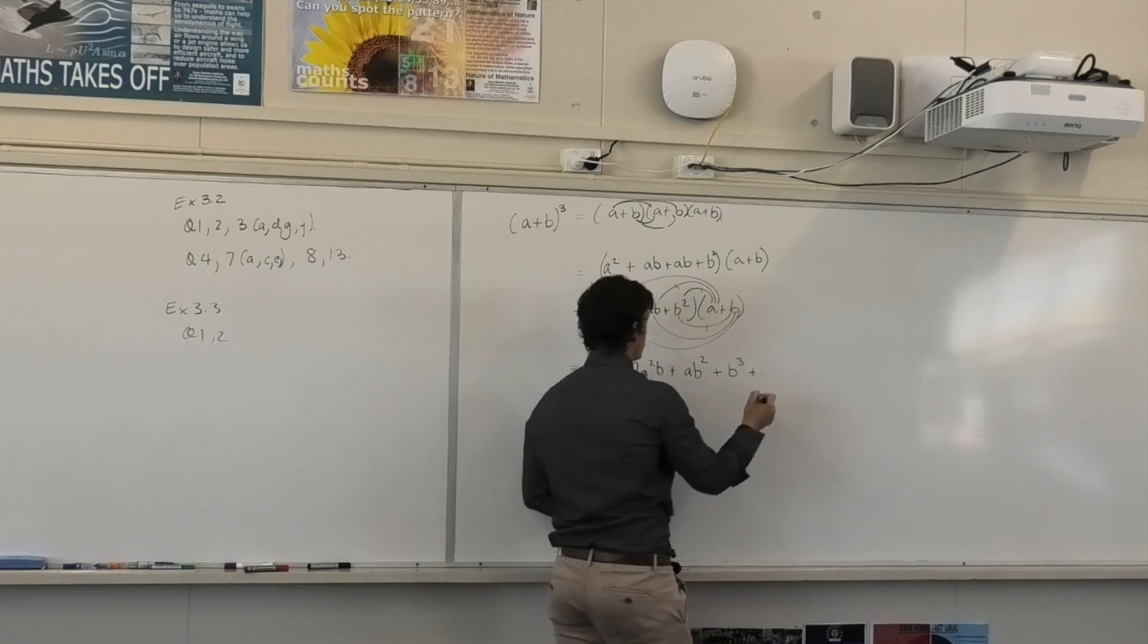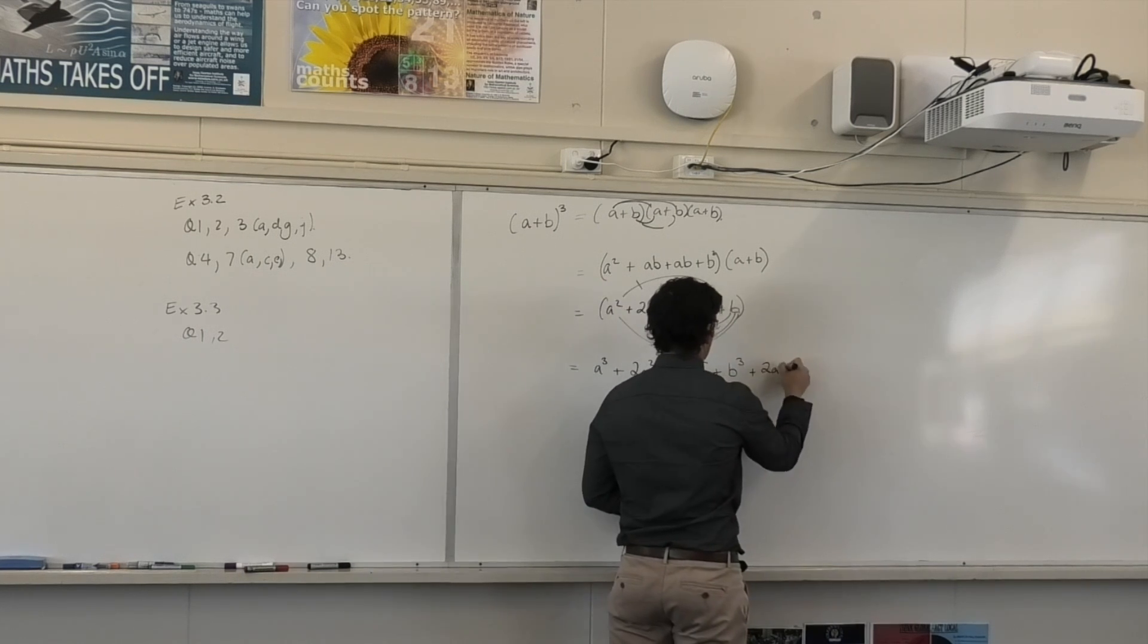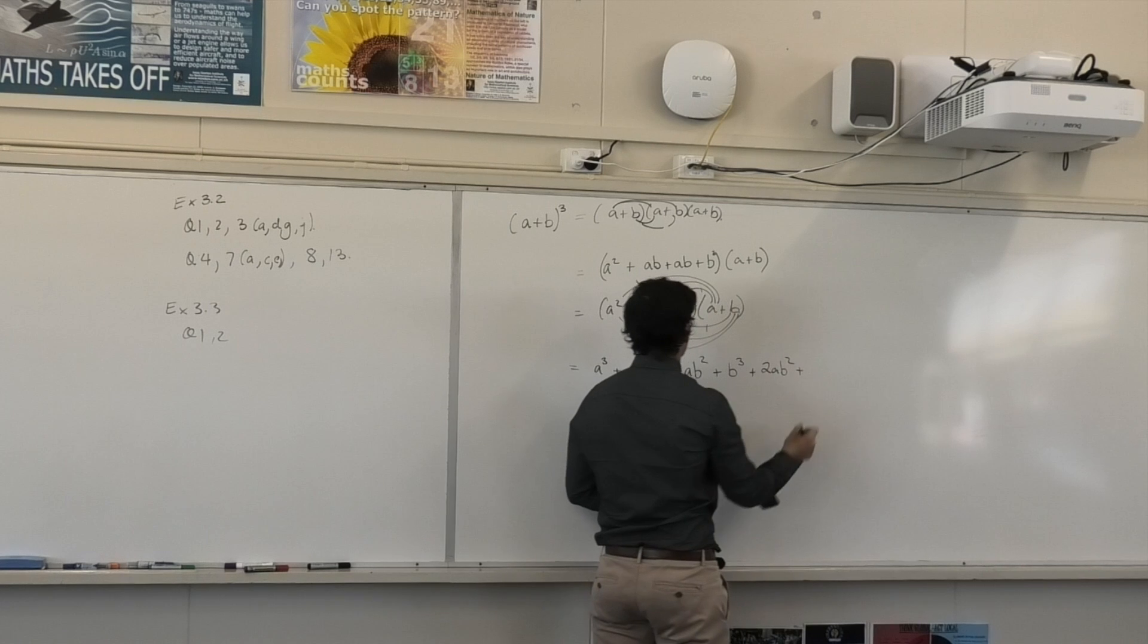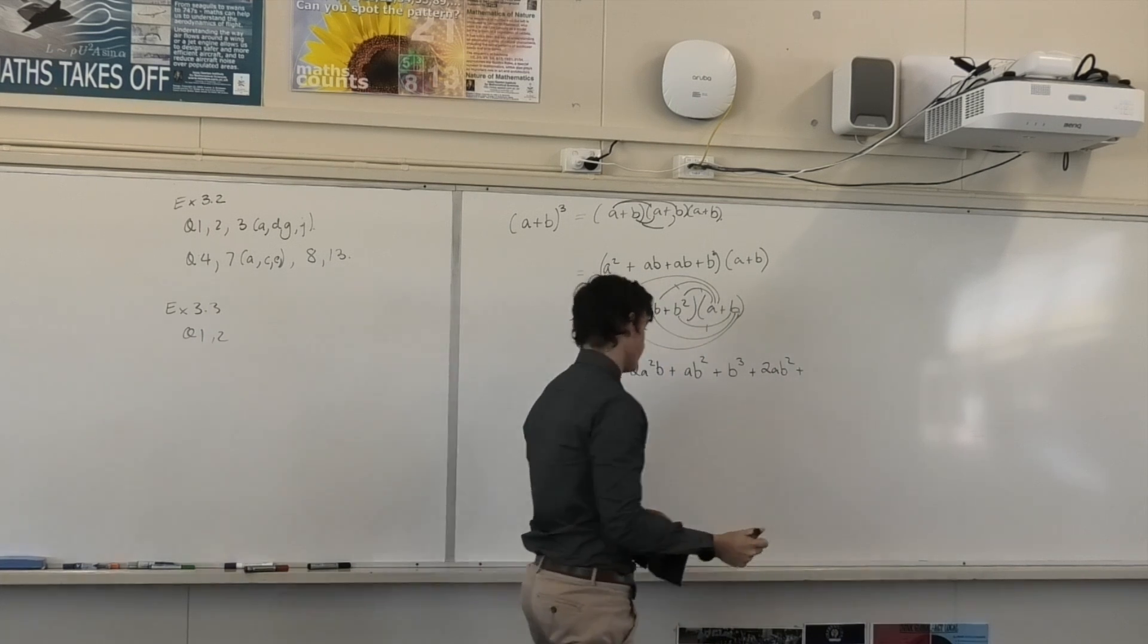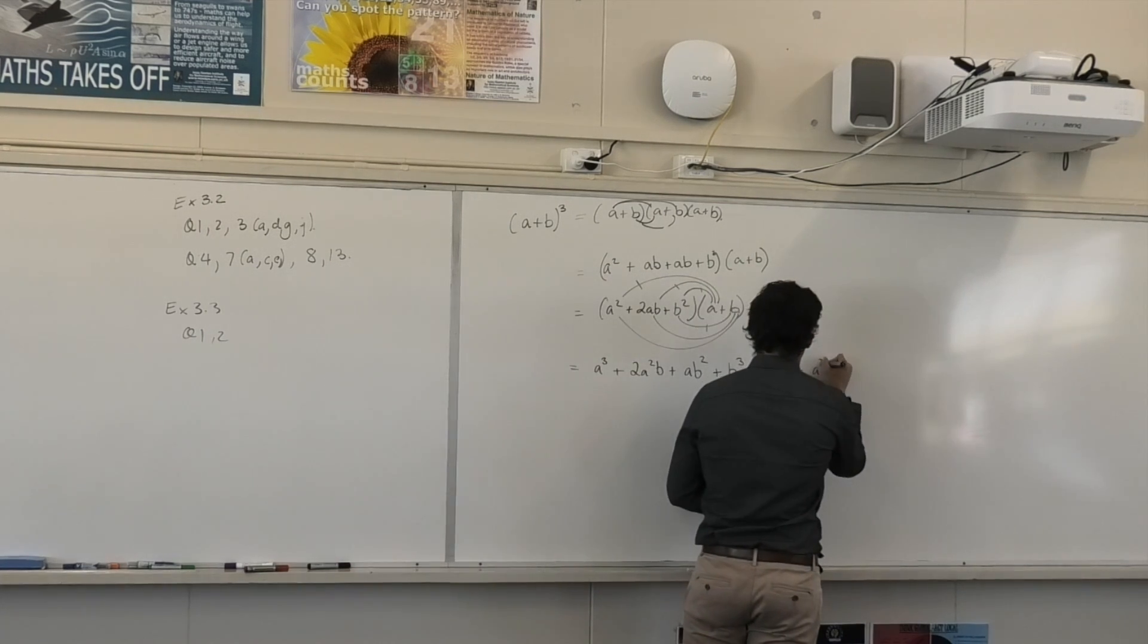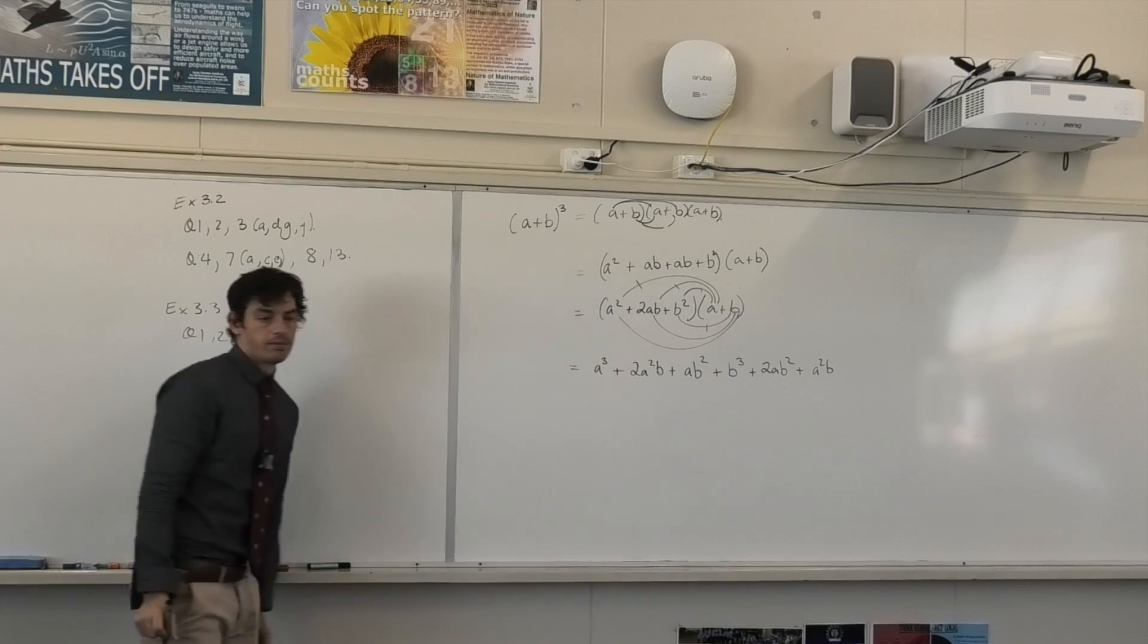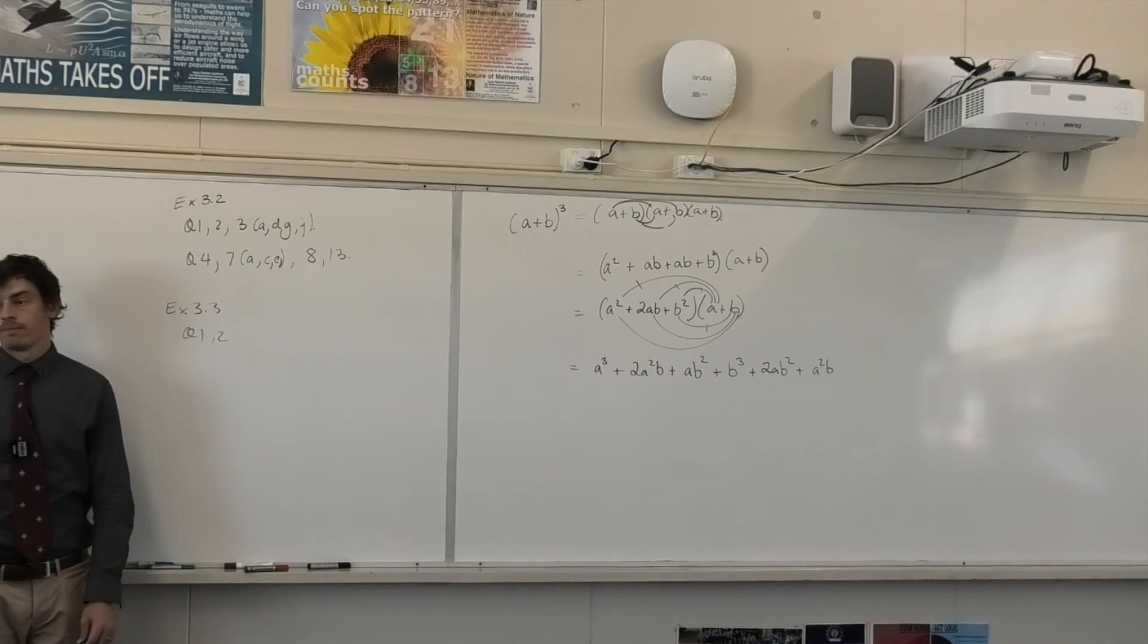Plus B times B squared? B cubed. Plus B times 2AB? 2AB squared. Plus B times A squared? A squared B. Correct? Yes. Happy with that? Yes.